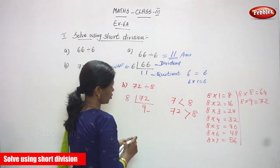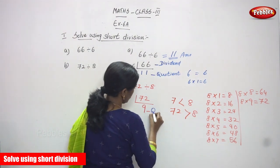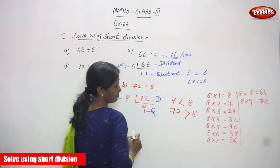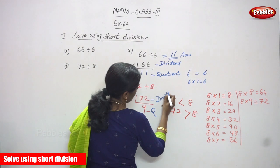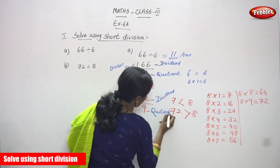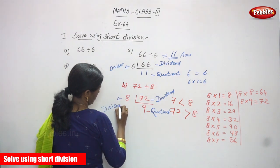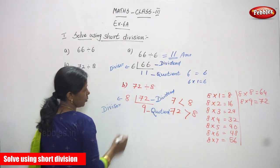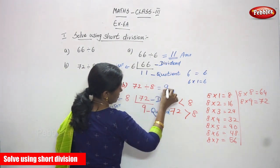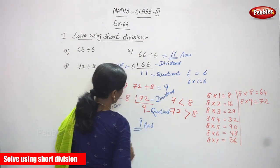So 9 is the quotient. This is the dividend and this is the divisor, and 9 is the quotient. For this question, 72 divided by 8, the answer is 9. So 9 is the right answer for question B.